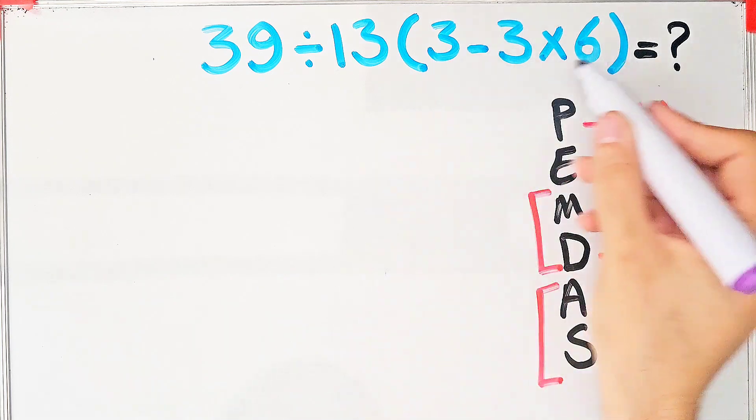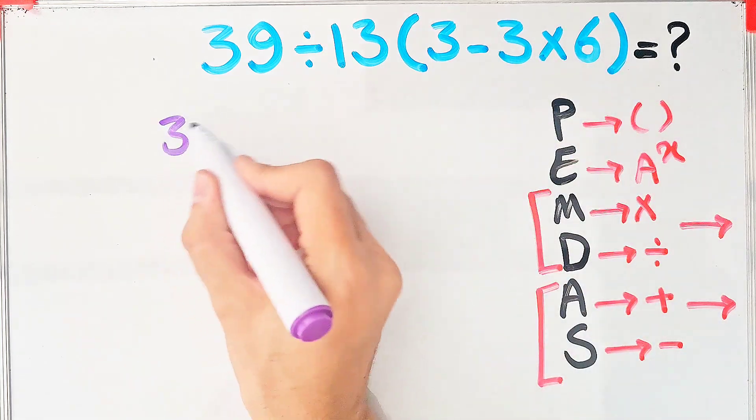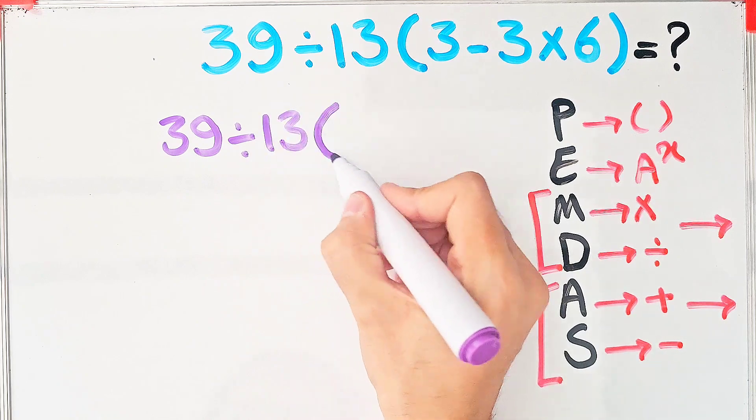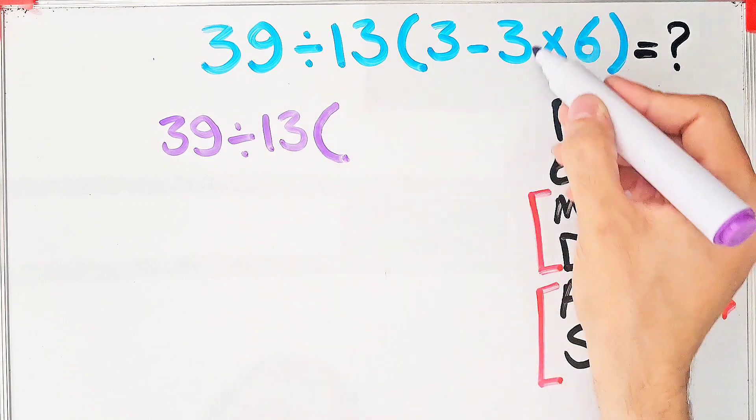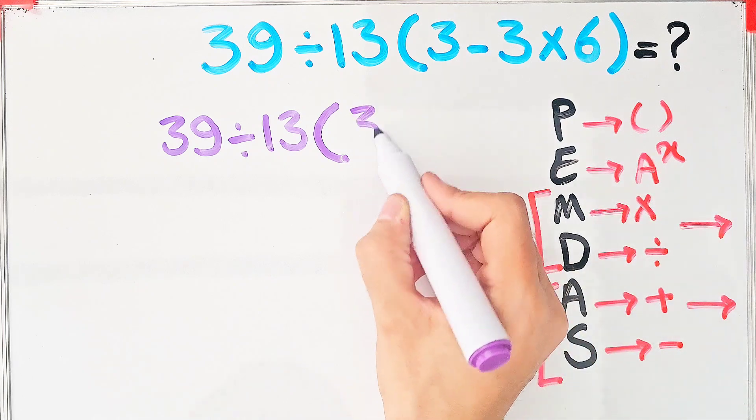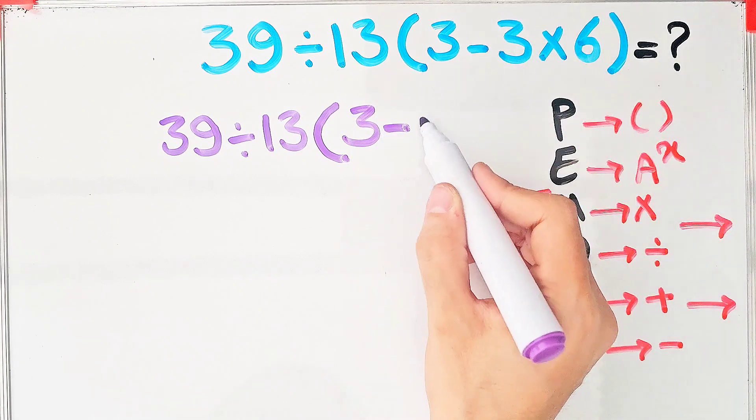According to this rule, first we simplify the parentheses. We have 39 divided by 13, and in the parentheses, we have subtraction and multiplication. First, we do multiplication because multiplication has higher priority than subtraction. We have 3 minus 18.